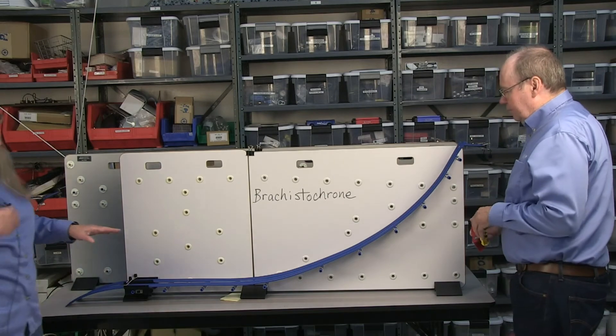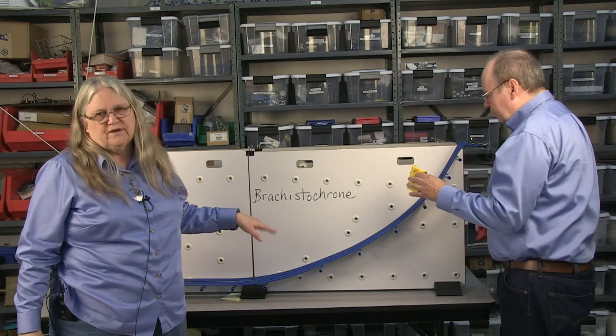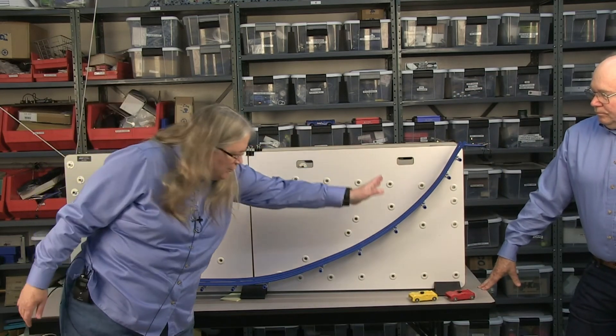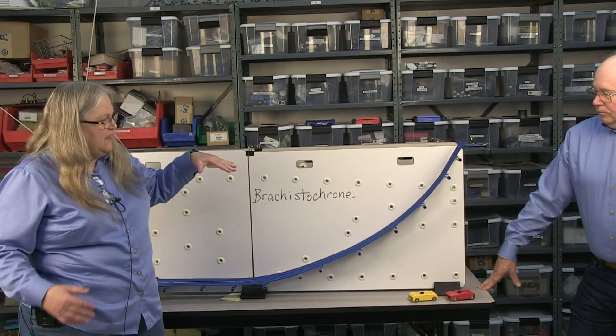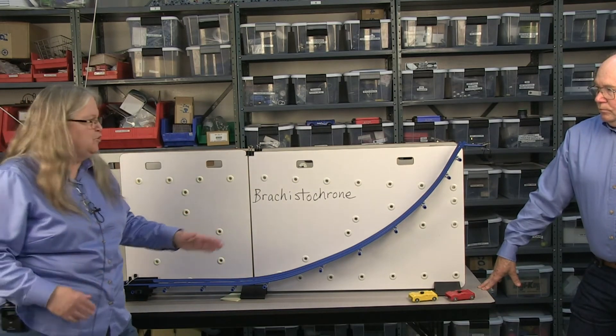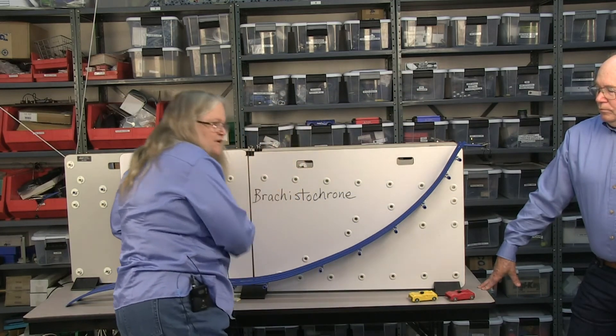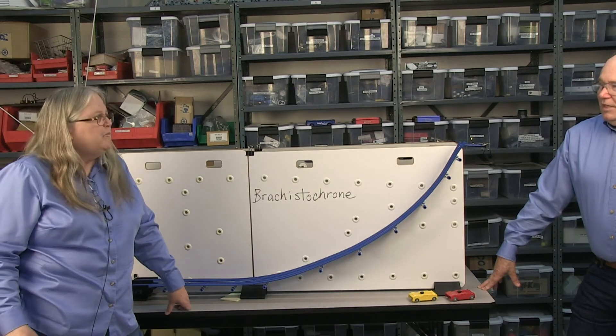Brachistochrone actually means the fastest time. This is a particular curve that we've put into the board so that it will go faster than going straight down. It'll go faster than something dipping down and back up. It is the fastest. Least time.